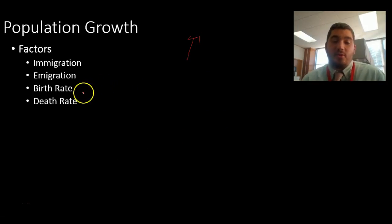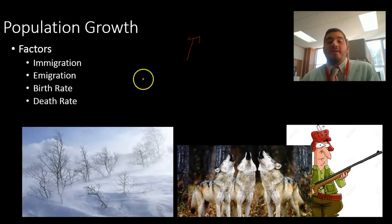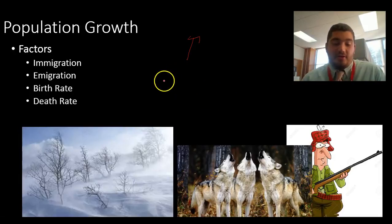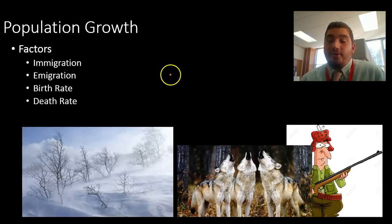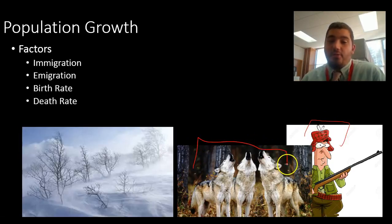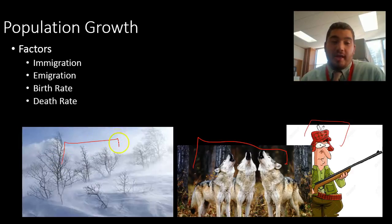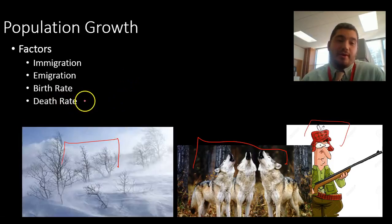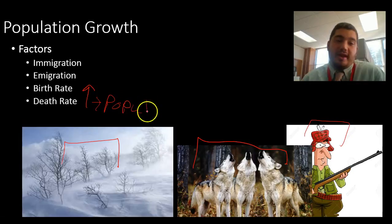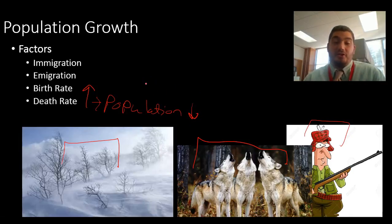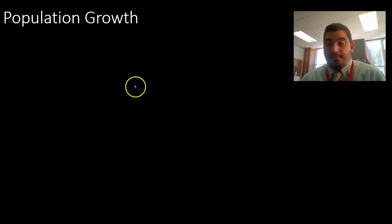The death rate, on the other hand, is when organisms die, and there are a lot of factors that can affect our friends the deer and increase the death rate. There may be a lot of hunters one season, maybe a lot of predation by wolves and coyotes, or maybe a really bad winter with no food. All these things are going to make the death rate increase, which causes the population to go down. So these four factors are what control growth.